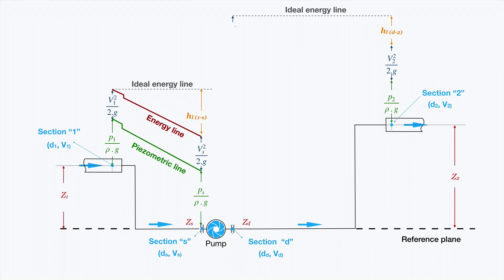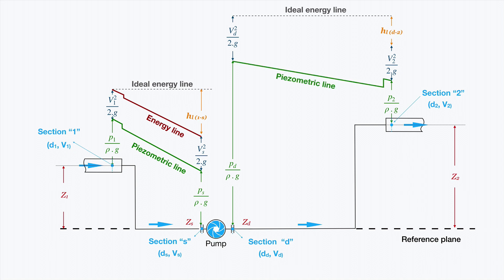Note how the velocity head — the kinetic energy at section D — is higher than the one at section 2, because the diameter at section D is smaller than the diameter at section 2. Following the law of mass conservation, when diameter is reduced, velocity increases. Since the value of the geodetic head at section D is 0, because this section matches the reference plane, what we have here is the energy due to pressure. We can represent the piezometric line and the energy line between these two sections.